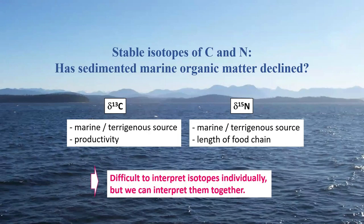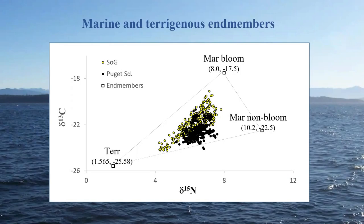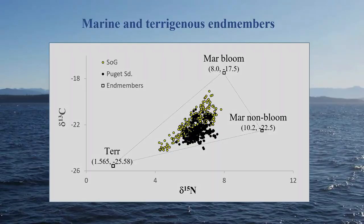Because each one of them can tell two different things, it's difficult to interpret these isotopes individually, but we can interpret them together. There's been a change in the total productivity over time — we added together the proportions of marine bloom and marine non-bloom material to make just one single marine-derived end member. Then we plotted that over time in the sediment cores from Strait of Georgia and Puget Sound to see whether there had been a change in the flux of the marine-type organic matter from phytoplankton over time.